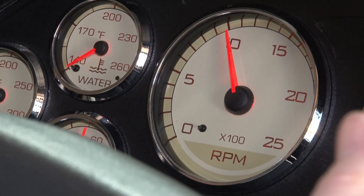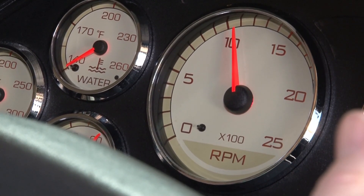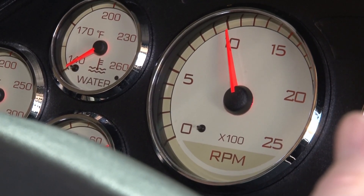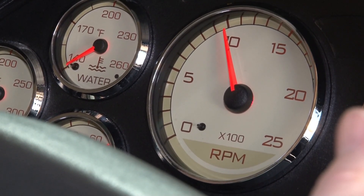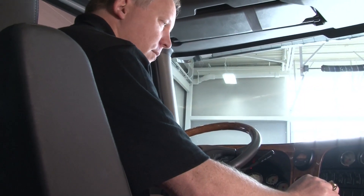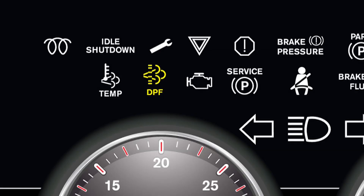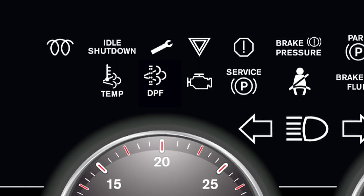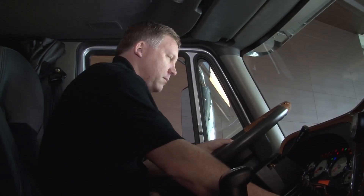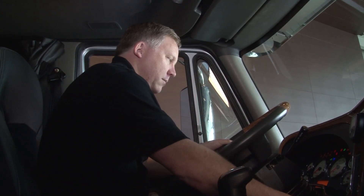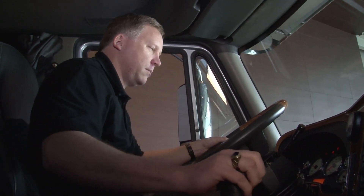As the exhaust gets hotter — and it will get quite hot, so be careful — it will burn the soot in the DPF and clean it out. Try not to interrupt the Parked Regeneration process; wait until it completes. The DPF light will then go out, the message center will clear, and you can resume your normal driving. If the light does not go off, you will need to contact your closest international dealership to determine the problem.